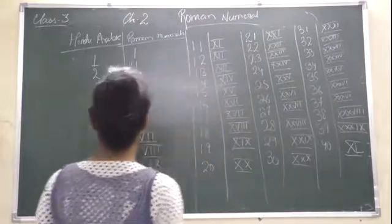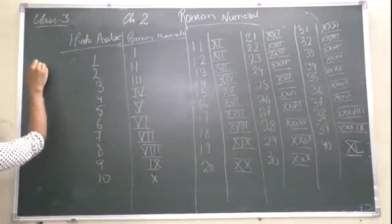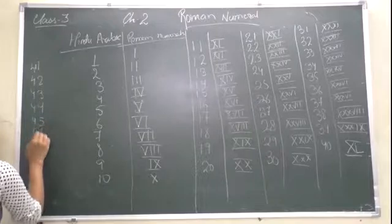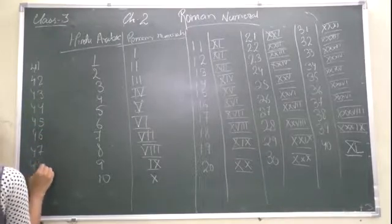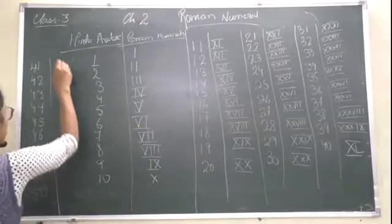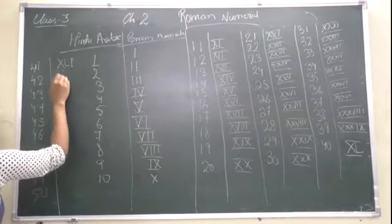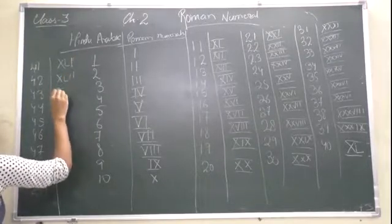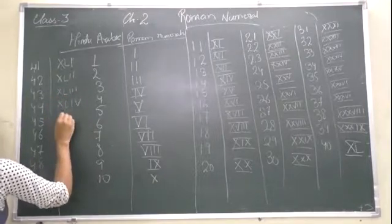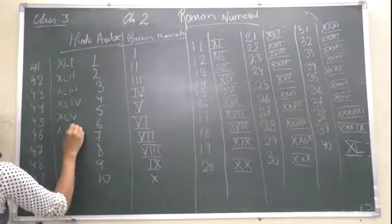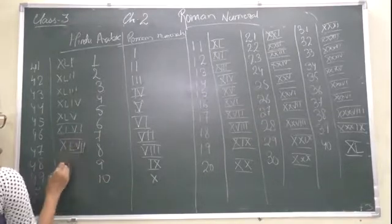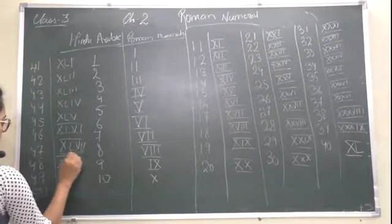Okay, now I will write here 41 would be written as here, 41, 42, 50. Okay, so 41 would be written as XLI, XLII, XLIII, and so on up to L.